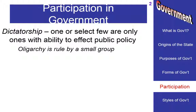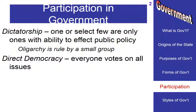A specific type of dictatorship is called an oligarchy, when it is run by a specific small group. However, if we have more participation in government, the other extreme is called direct democracy, where everyone votes on everything. This becomes a very cumbersome style of government. So what has been developed to replace that is what is referred to as indirect democracy.